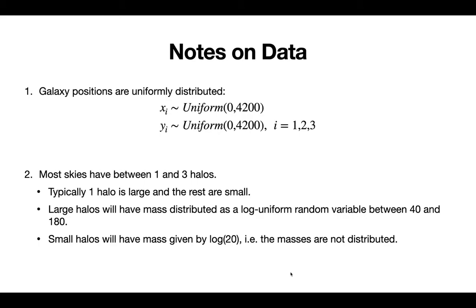So for the large halos, we will have the mass distributed as a log uniform random variable between 40 and 180. And the small halos can be assumed to have some mass of about log 20. Now technically the small halos have a distributed mass, but this given or assumed mass is close enough to those values that it simplifies the model, and it's a fair assumption to make.